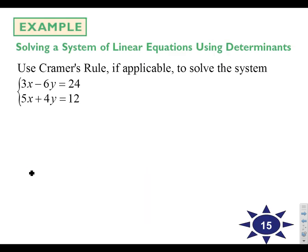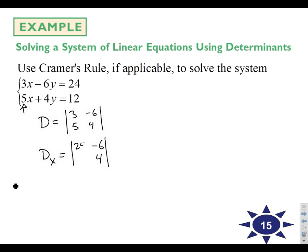Let's use Cramer's rule to solve this system. I'm going to write out D — just my coefficients: 3 and 5, and negative 6 and 4. Then DX: we keep the Y variable constants, negative 6 and 4, but swap in 24 and 12 for the X column. For DY, we keep the X coefficients 3 and 5, and swap in 24 and 12 for the Y column. Finding the determinants: D is 12 minus negative 30, which is 42. DX is 24 times 4 is 96, minus negative 72, which is 168.